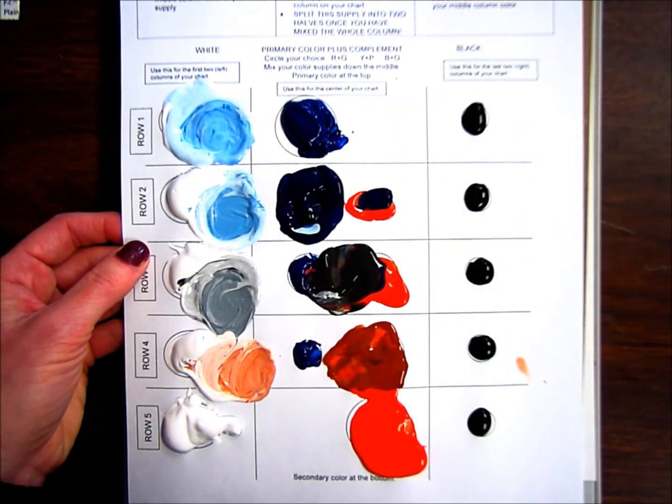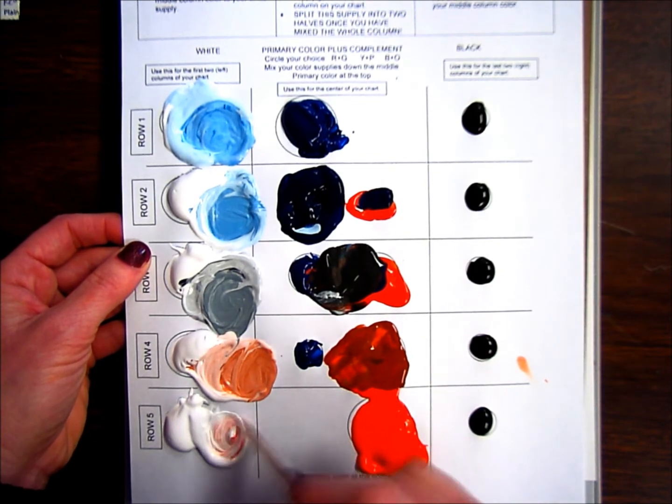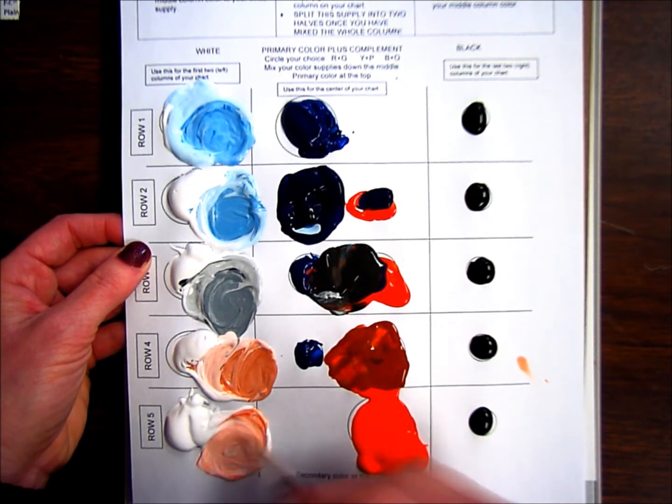Rinse. A little bit of orange into the white. It'll look similar to row four, but it should look a little cleaner, a little brighter.